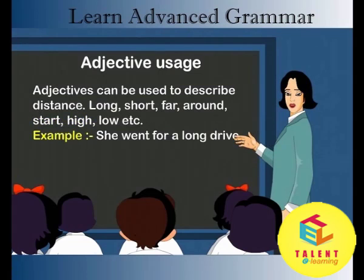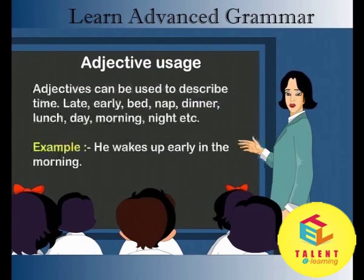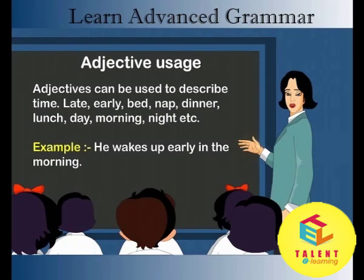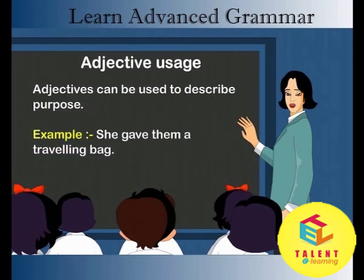Adjectives can be used to describe distance: long, short, far, around, high, low, etc. Example: she went for a long drive. Adjectives can be used to describe temperature: cold, warm, hot, etc. Example: the night was cold. Adjectives can be used to describe time: late, early, bed, nap, dinner, lunch, day, morning, night, etc. Example: he wakes up early in the morning. Adjectives can be used to describe purpose. Example: she gave them a traveling bag.